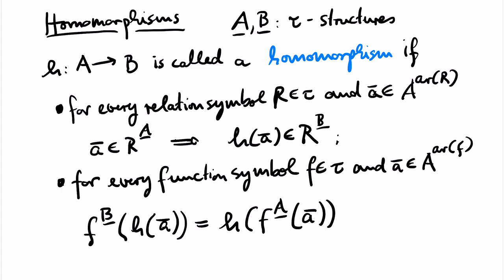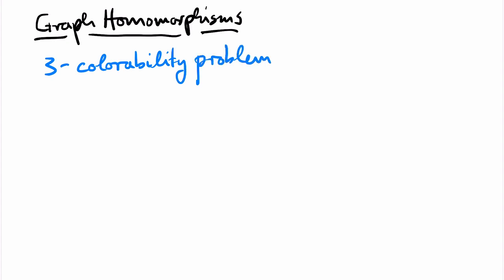If you check what this means for example for groups, you will see that the definition specializes to the definition of group homomorphisms that you already know. The specialization to graphs is also interesting. For example, the three-colorability problem can be phrased using homomorphisms.